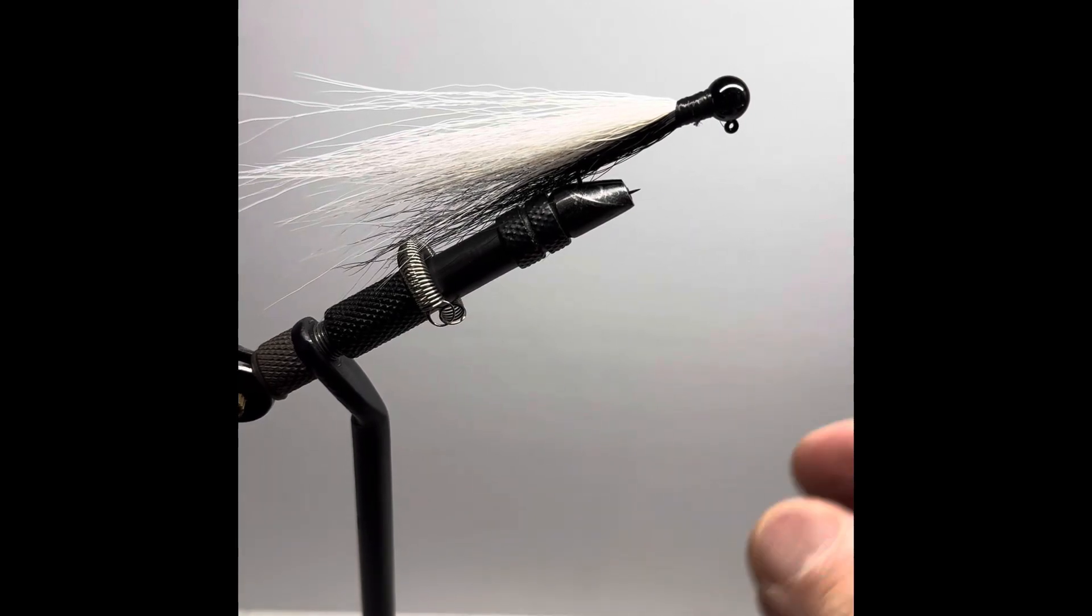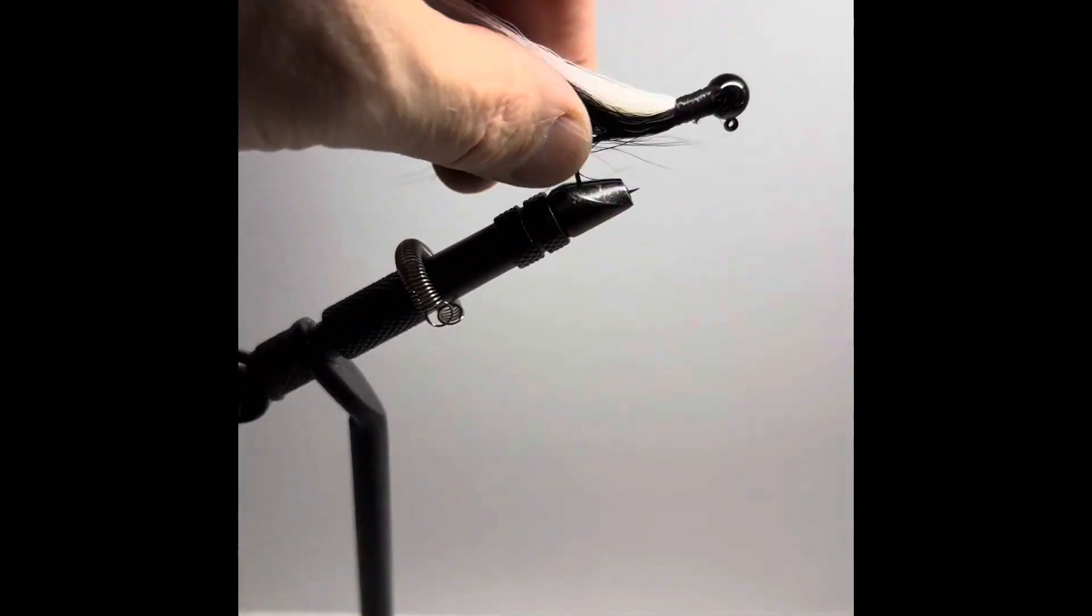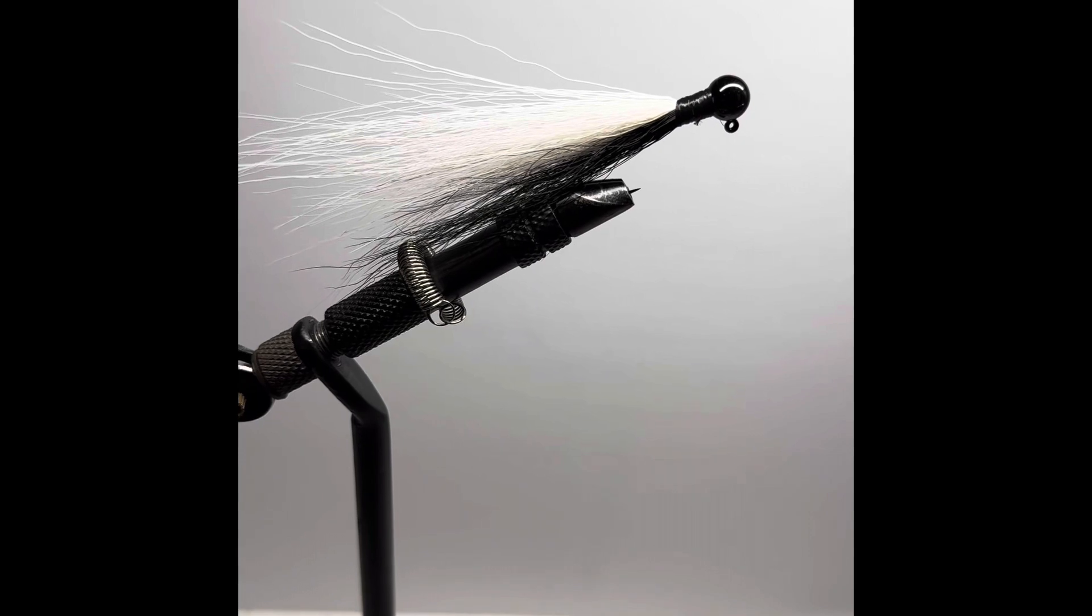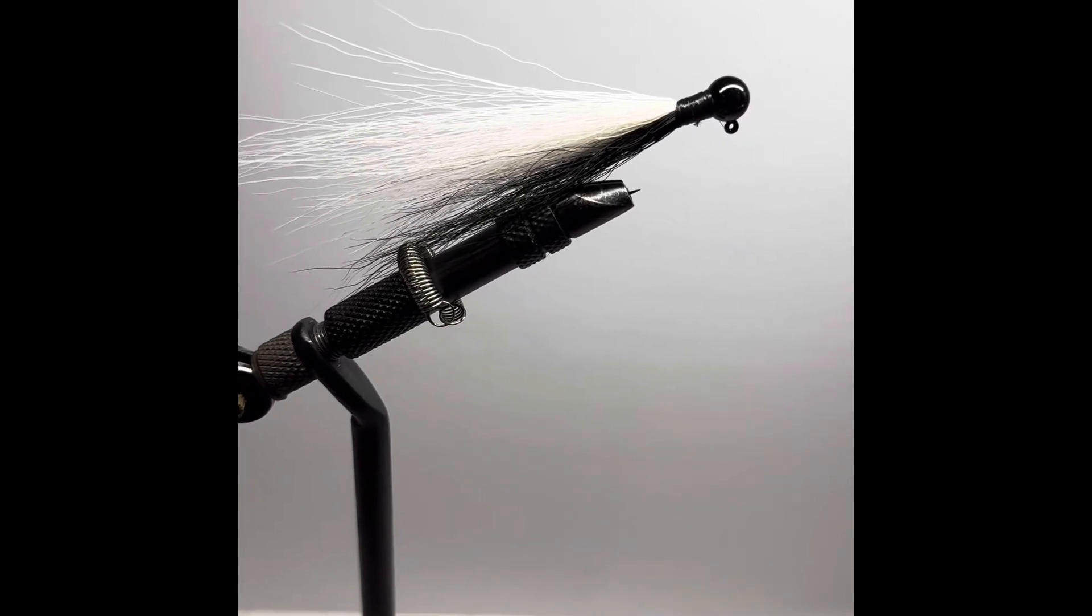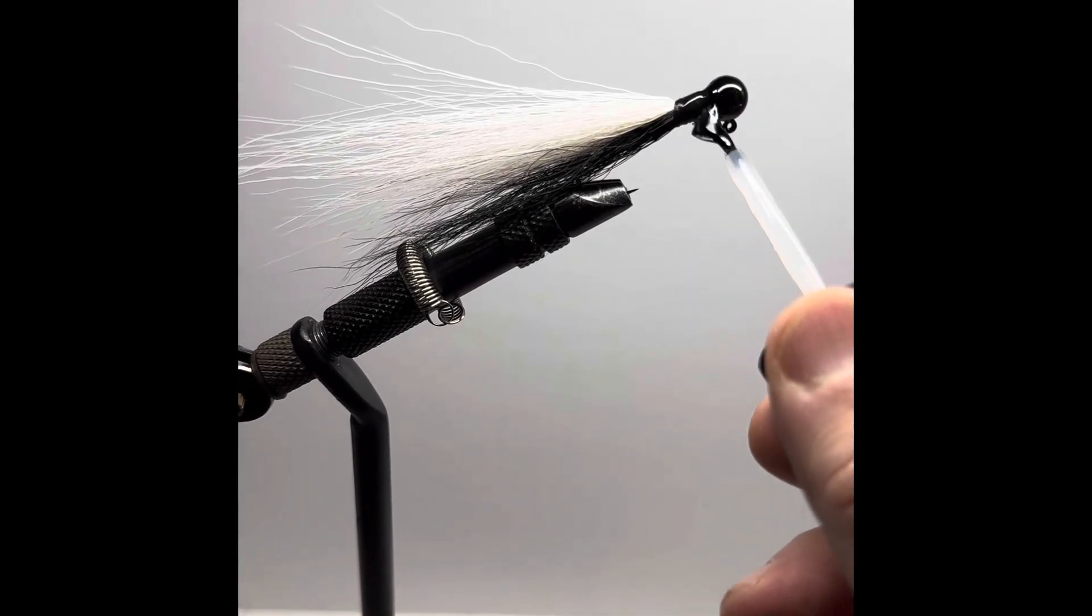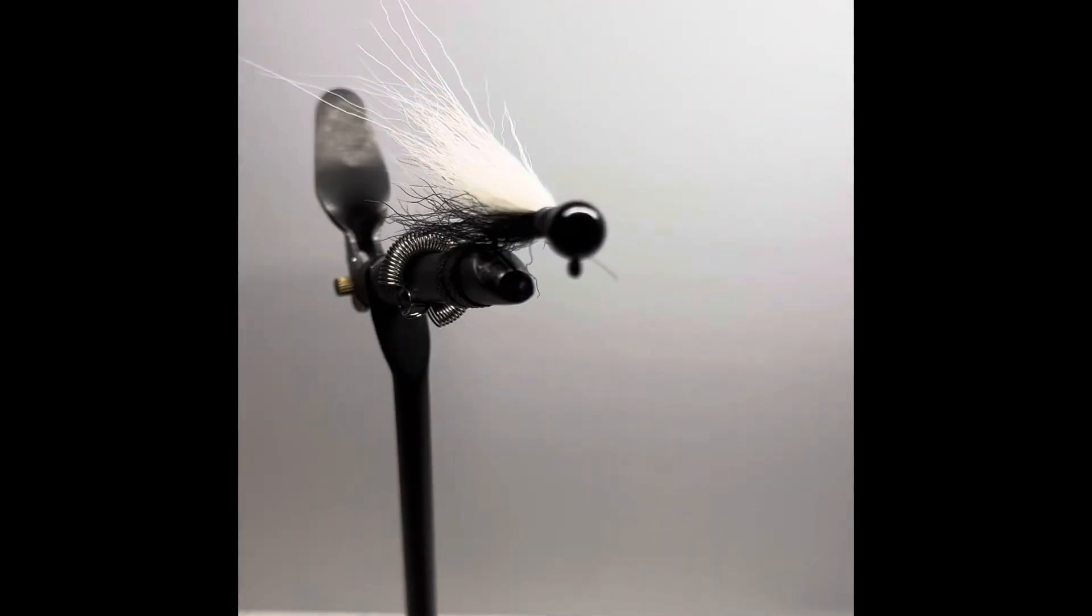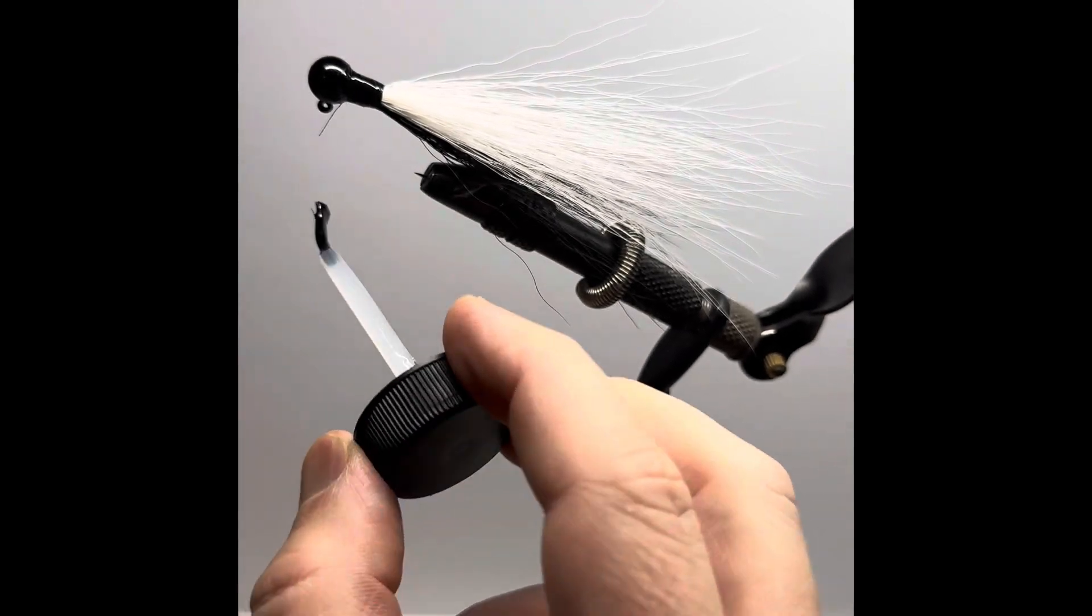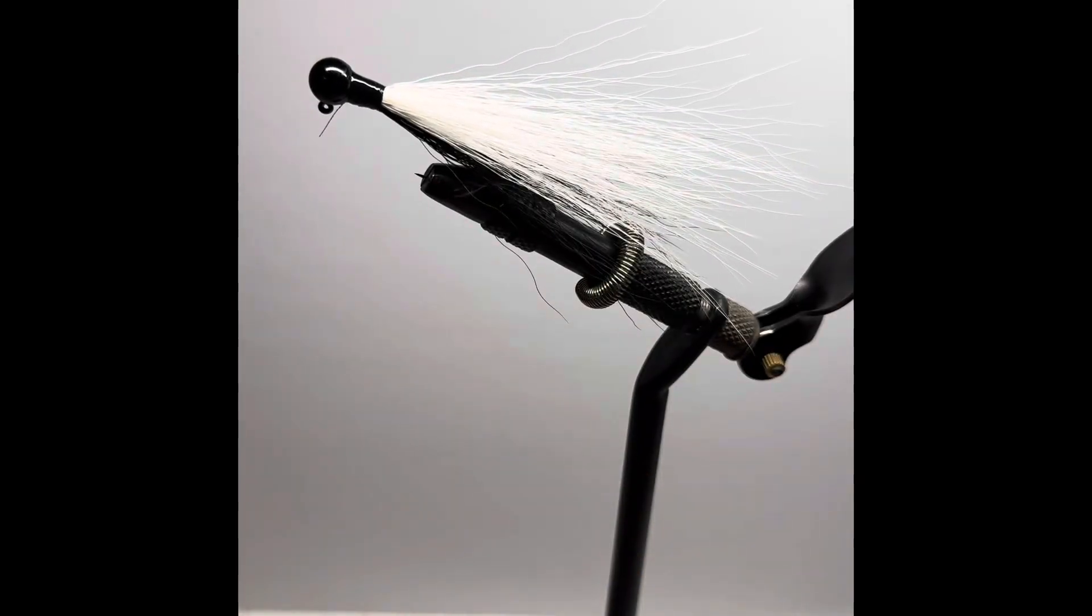Then you're going to take whatever epoxy that you prefer, and we're going to cover that thread with it just to prevent fraying. This bait gets the depth pretty nicely. And really it's a simple, simple mimicking of a bait fish.